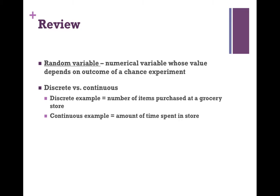That grocery store example would be a discrete example. A random variable is numeric, so it's either discrete or continuous. Discrete examples are counting examples, like the number of items purchased. Continuous examples are those that measure something — for instance, the amount of time a person spent in the store. This is a numeric variable because it depends on the person.